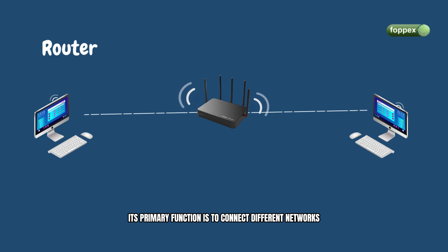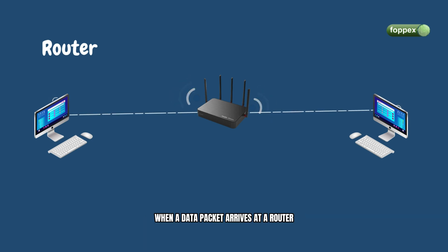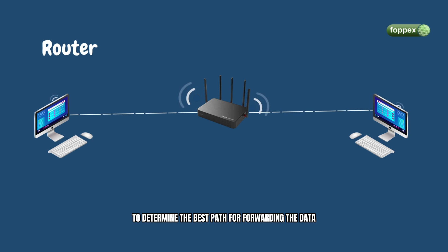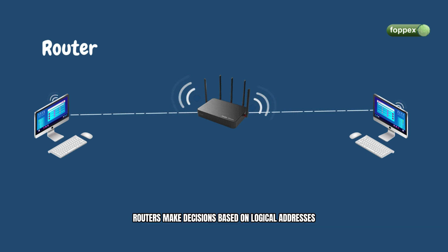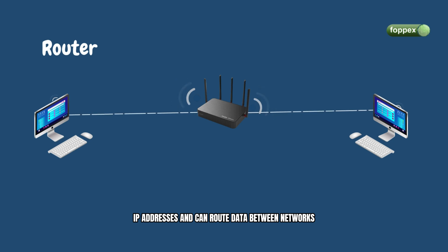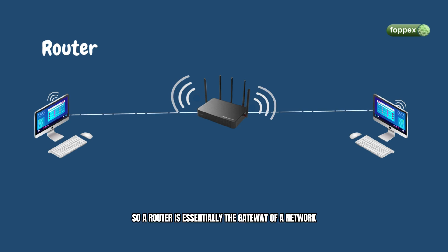Its primary function is to connect different networks and facilitate communication between them. When a data packet arrives at a router, it inspects the packet's IP address to determine the best path for forwarding the data. Routers make decisions based on logical addresses, IP addresses, and can route data between networks, such as connecting a local network to the Internet. So, a router is essentially the gateway of a network.